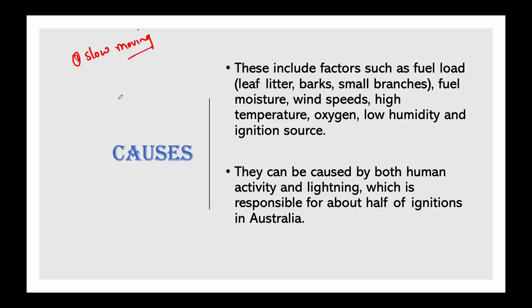There are other factors that create a favorable environment for bushfires. These include: fuel load — which covers leaf litter, barks, and small branches — fuel moisture, wind speed, high temperature, oxygen to ignite, low humidity, and an ignition source. These fires can be caused by both human activity and lightning.